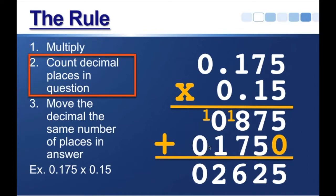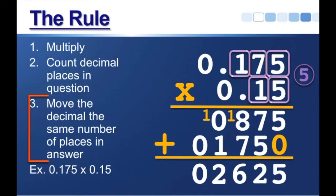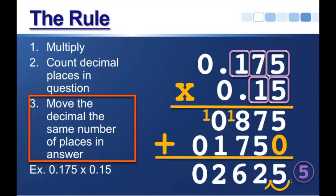Now, step 2. We count the decimal places in the question. Well, how many places do we have? We have 1, 2, 3, 4, and 5. So that's a total of 5 decimal places. Which means, in step 3, we're going to move the decimal the same number of places. We're going to move the decimal in our answer 5 places to the left, starting from the right. So, we'll move 1, 2, 3, 4, 5, put our decimal there, our final answer is 0.02625.